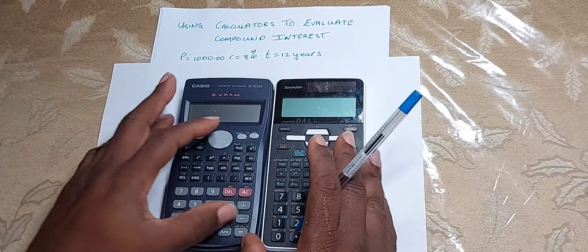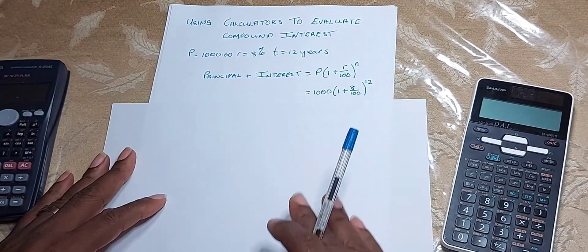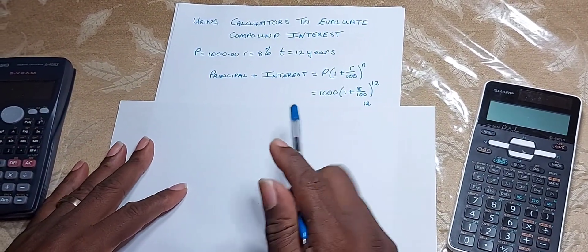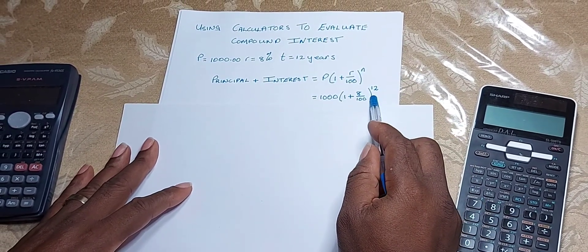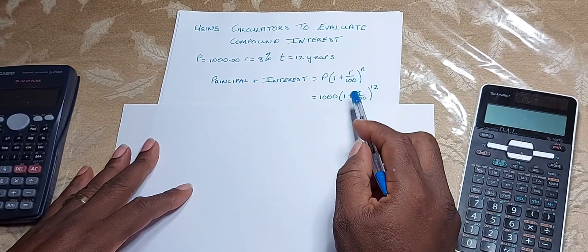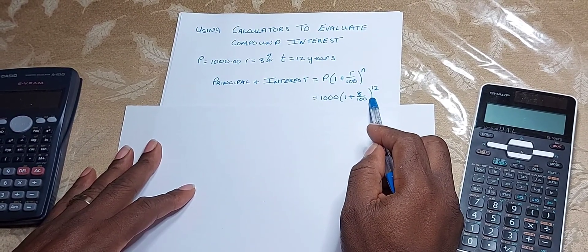Now we can use the compound interest formula. When we substitute these values, the values of P, R, and T respectively, we have this. But today we are going to be looking at how we can input these values in the calculator to determine our answers.